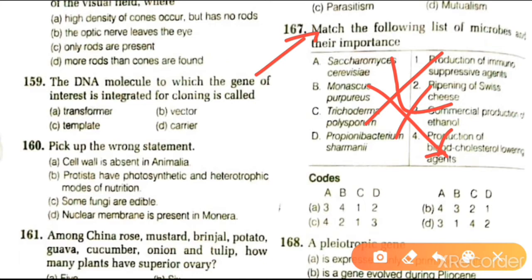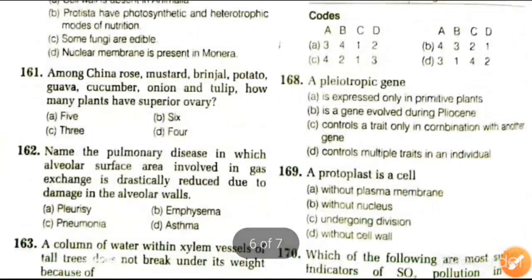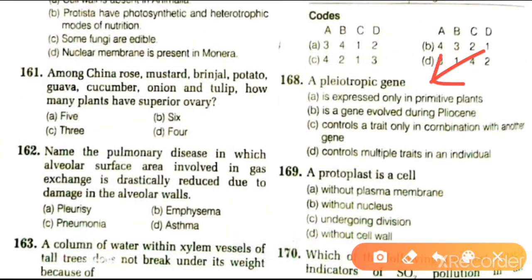Next question: a pleiotropic gene controls multiple traits. A pleiotropic gene is expressed only in primitive plants, is a gene involved in pleiotropy controlling its trait only in combination with other controls, or controls multiple traits. Answer is A. Protoplast is a cell without cell wall. The answer is without cell wall.